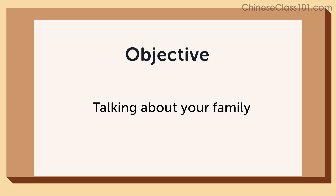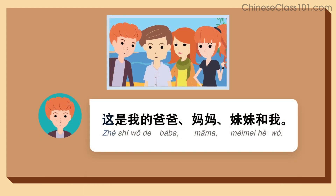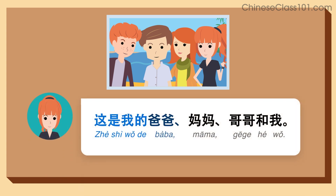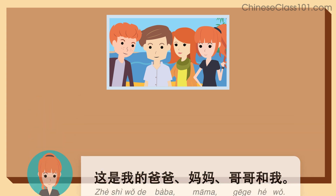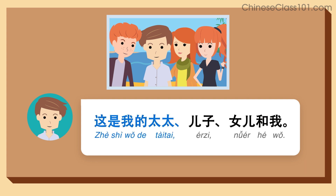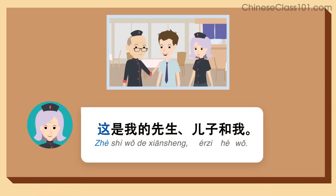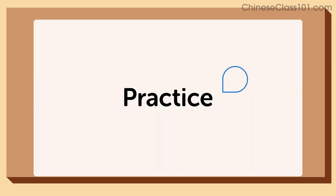是的，这是我的先生、儿子和我。 In the next minute, you'll be challenged to talk about your family. First, let's look at some examples. 这是我的爸爸、妈妈、妹妹和我。 这是我的爸爸、妈妈、哥哥和我。 这是我的太太、儿子、女儿和我。 这是我的先生、儿子和我。 Let's practice.